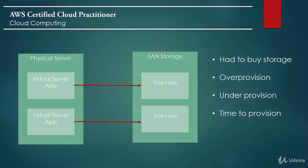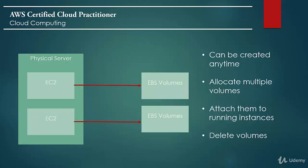There's always a probability you'll over-provision or under-provision storage, and either way you're losing on cost — if you buy too much and don't use it, you're paying for nothing. There's also the time to provision: getting the storage physically in place takes time. In AWS, you have EBS — Elastic Block Storage — volumes. These can be created anytime, attached to a running instance, and deleted when no longer needed, without worrying about underlying hardware.